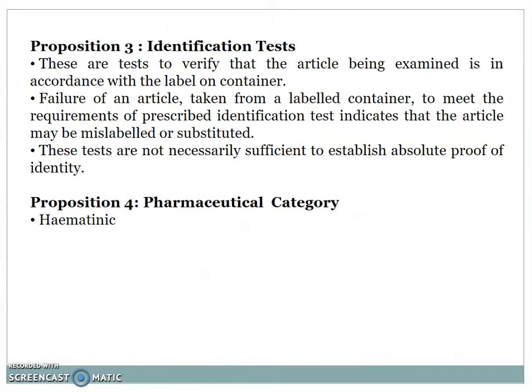Proposition 3: Identification tests. These are tests to verify that the article being examined is in accordance with the label on the container. Failure to meet the prescribed identification test indicates the article may be mislabeled or substituted. These tests are not necessarily sufficient to establish absolute proof of identity.